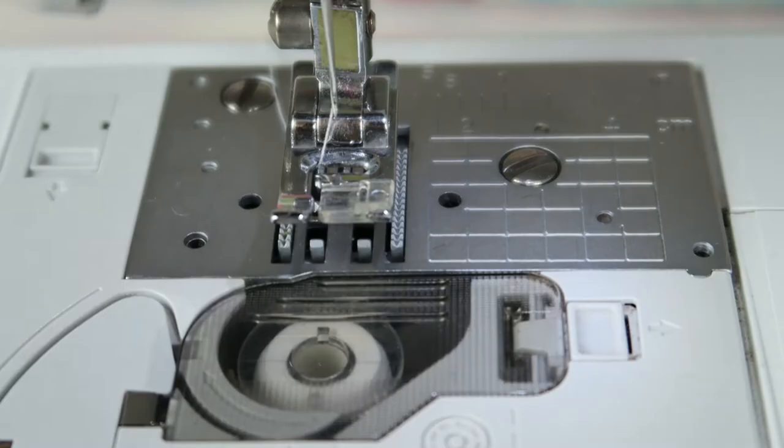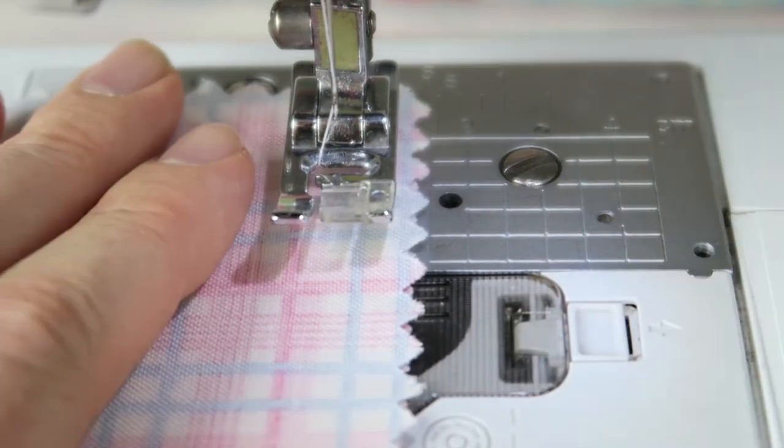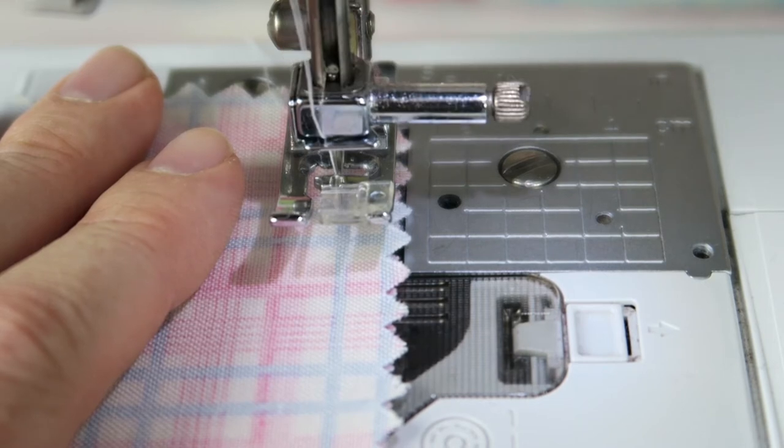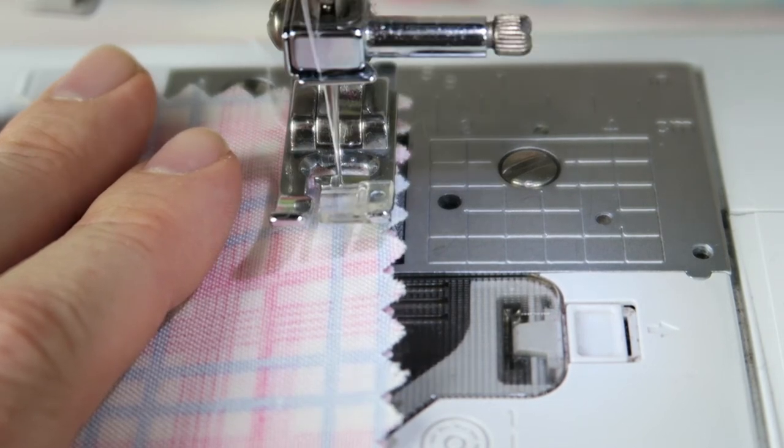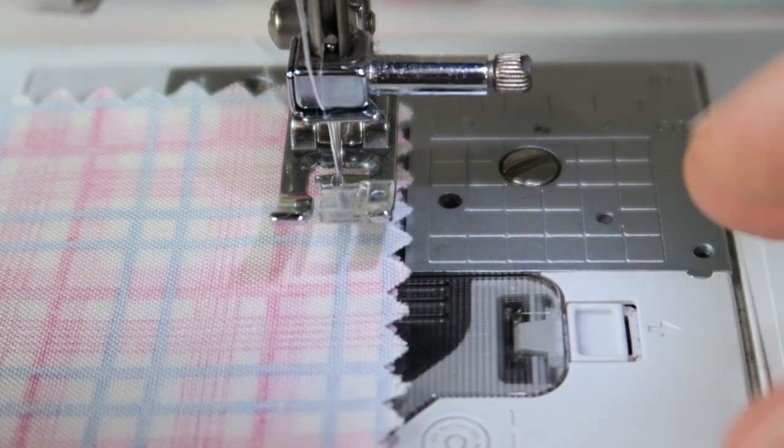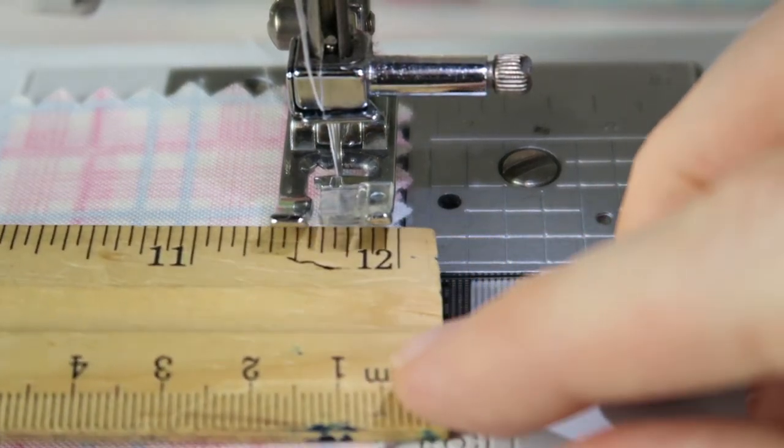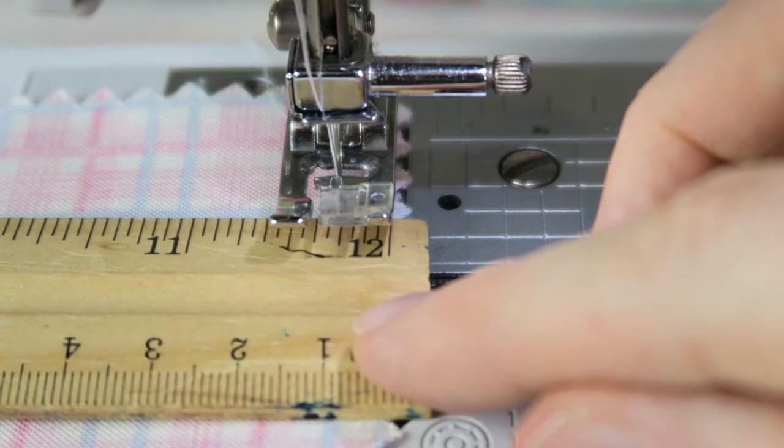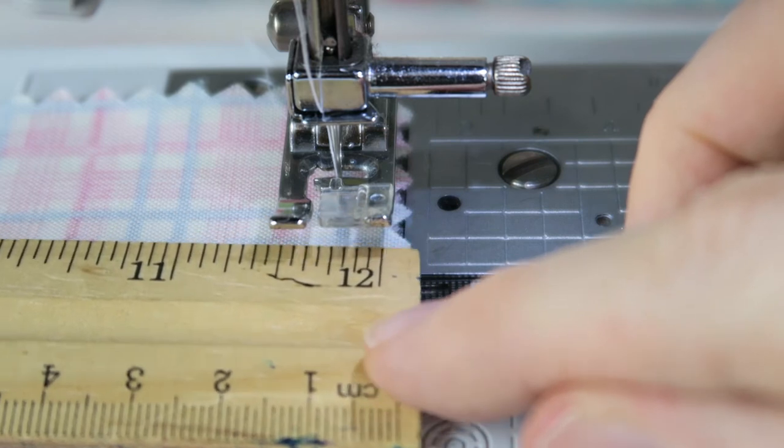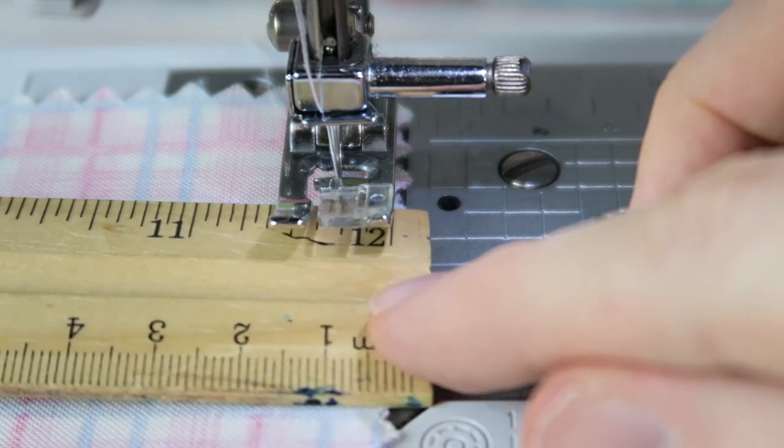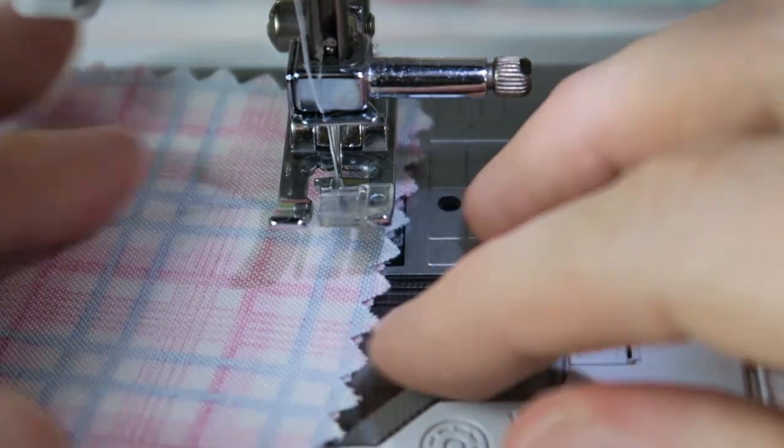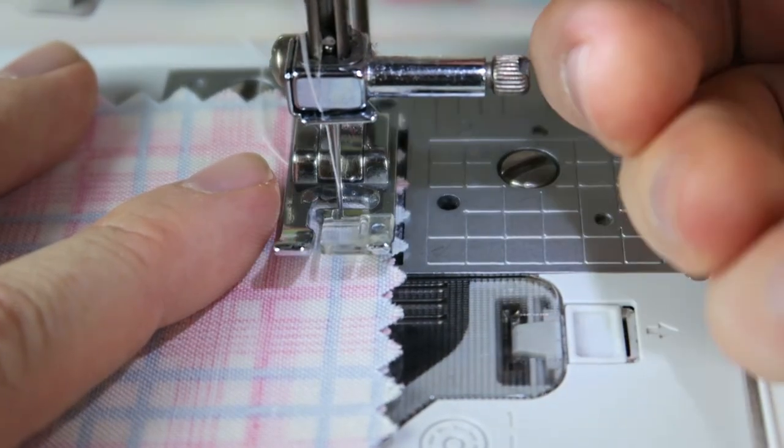Das kann auch sehr hilfreich sein. Und wenn man eben kein so ein Füßchen hat, dann kann man hier abmessen. Ich messe jetzt von der Nadelposition aus ab. Und wenn ich dann einen Quarter Inch haben möchte oder 6 Millimeter oder 7 Millimeter, dann ist der Abstand von meiner Nadelposition genau diese kleine Rille, die neben dem Nadelfüßchen ist, unterhalb der Nadel. Und da könnte ich das genau nehmen, diesen Abstand.